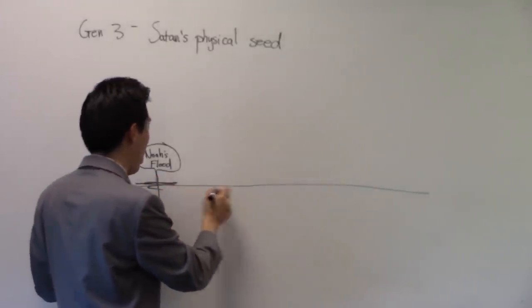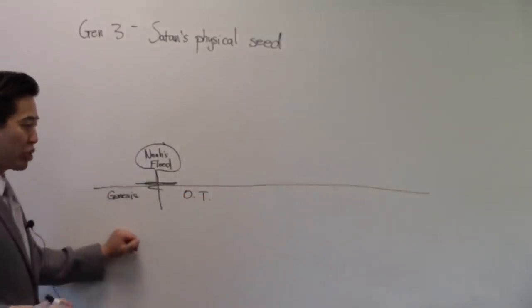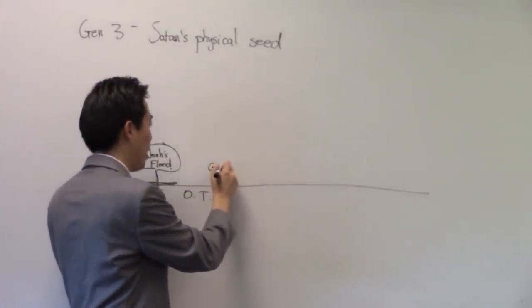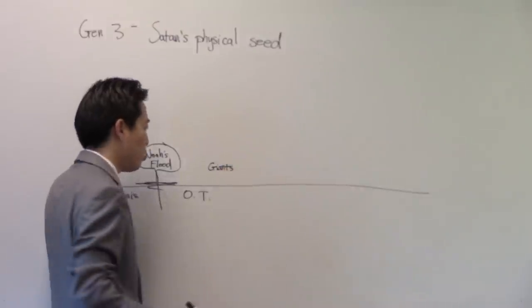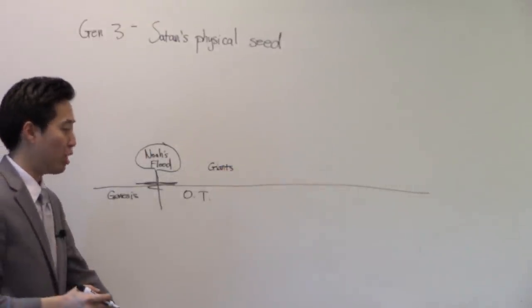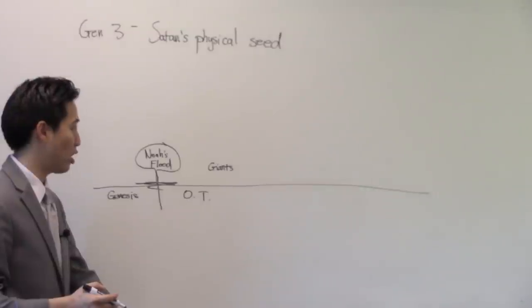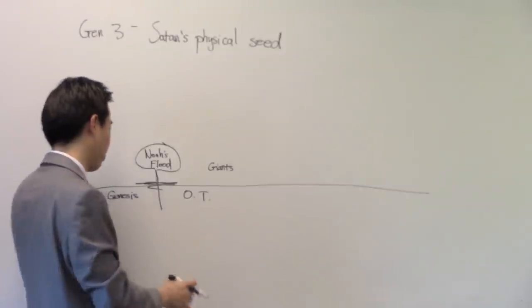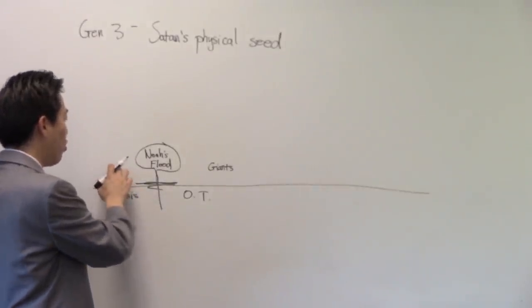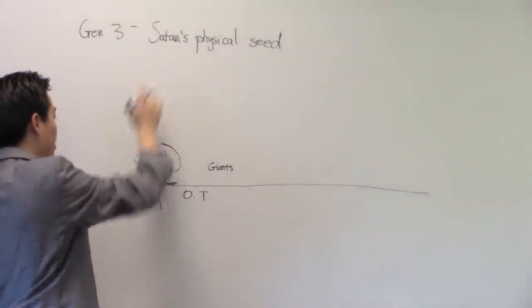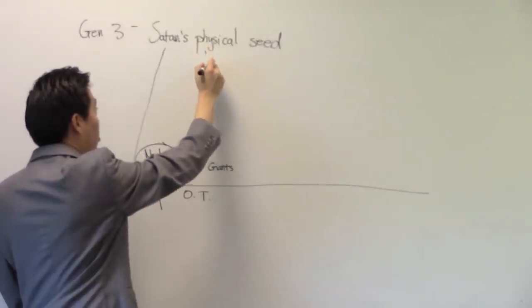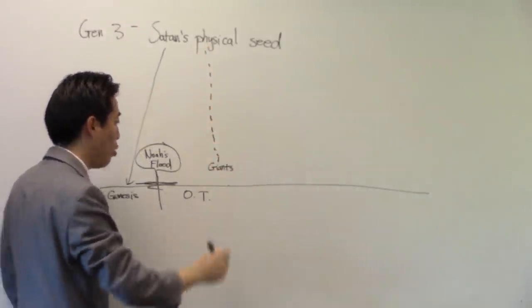However, what you're going to find out later on in the Bible throughout the rest of the Old Testament, we see them mentioned again. For example, you see in the book of Numbers, when they conquered the Promised Land, there are these giants. You see in the book of Samuel, when David and his sons were conquering the world, you see the giants mentioned again. Even though this was definitely there, the physical seed was definitely there at Genesis, Noah's flood wiped them out. But then there were like little remnants going around throughout the Old Testament.